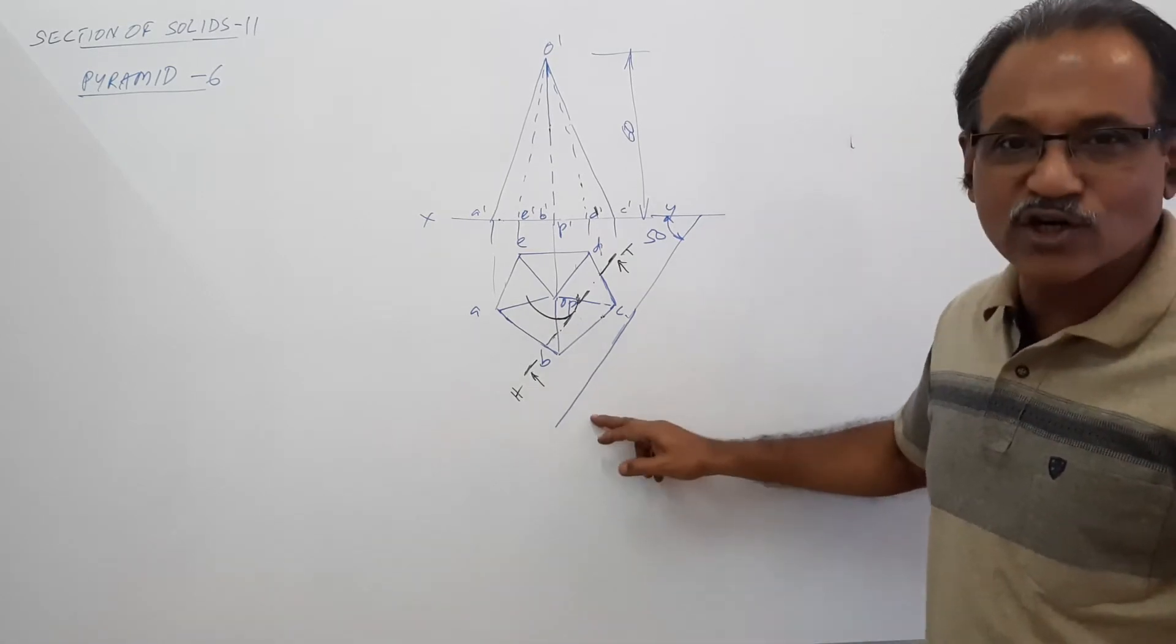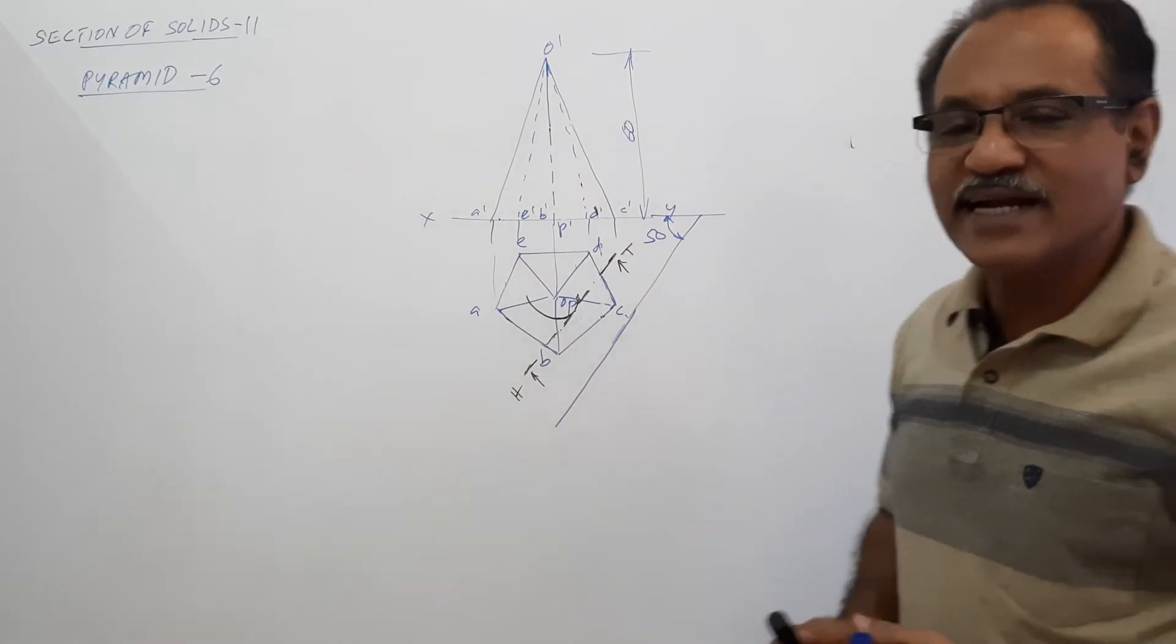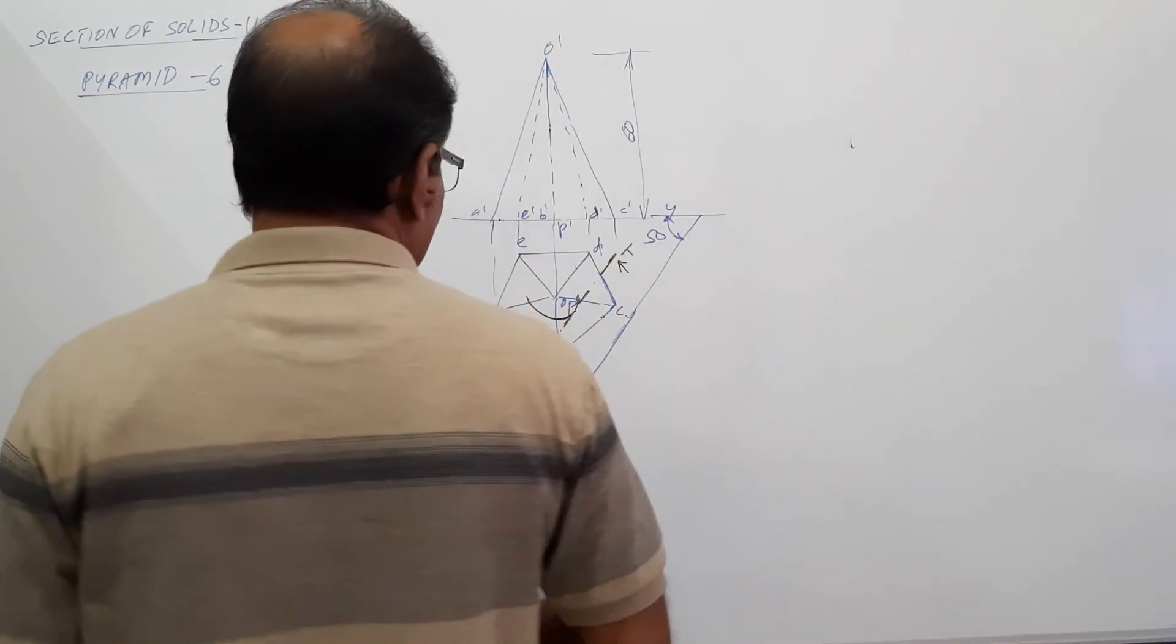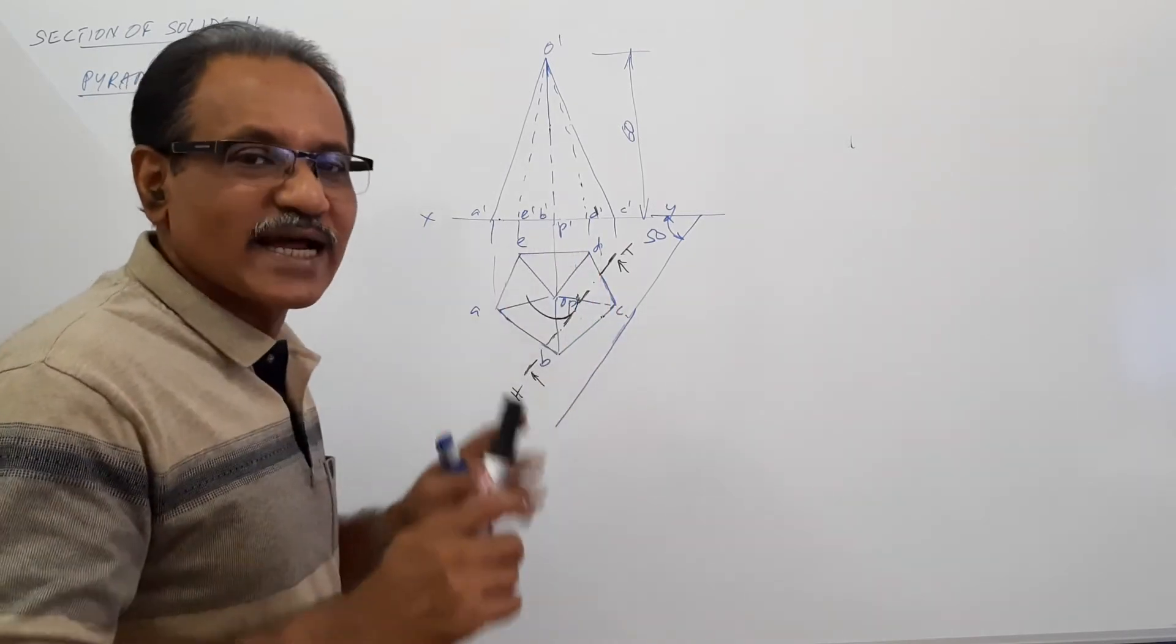This line which you have drawn will be used as X1Y1 line for true motion. Now how many tangent edges does the cutting plane cut? The cutting plane cuts OB, OC, only 2 tangent edges.